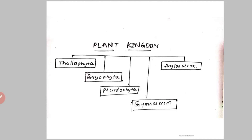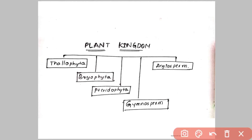In this session let us learn about the plant kingdom. The plant kingdom has majorly five divisions: Thallophyta, Bryophyta, Pteridophyta, Gymnosperms, and Angiosperms.